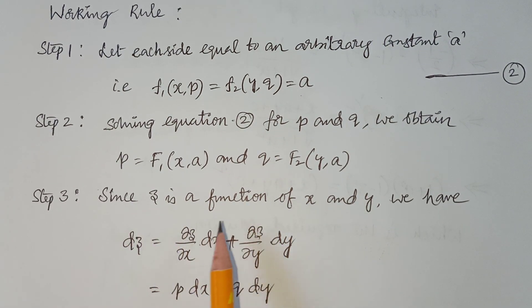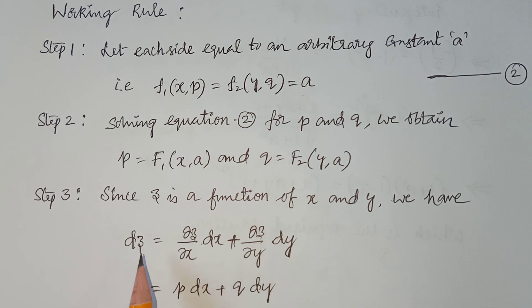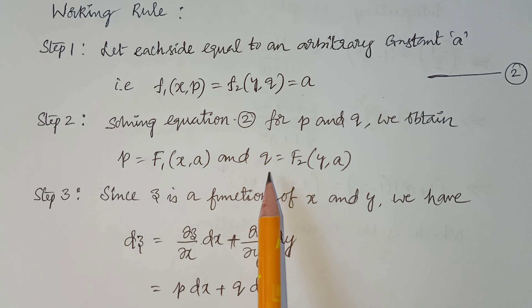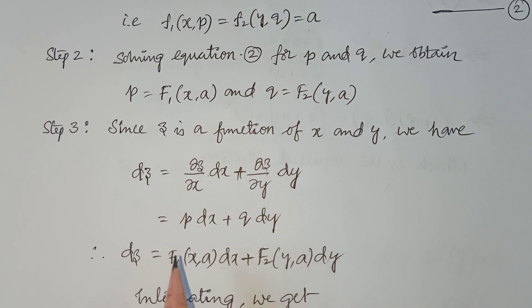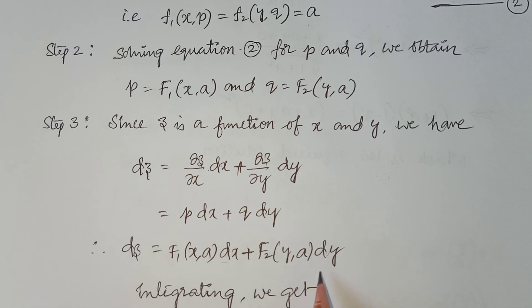Since z is a function of x and y, where z is the dependent variable and x, y are independent variables, we use the total differential formula: dz = (∂z/∂x)dx + (∂z/∂y)dy. Here ∂z/∂x = p and ∂z/∂y = q. Now substitute the values of p and q: dz = f1(x, a) dx + f2(y, a) dy.